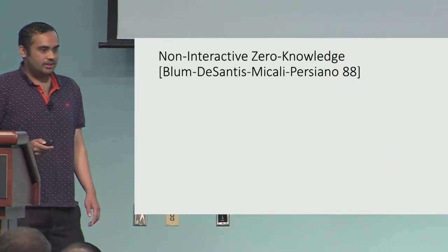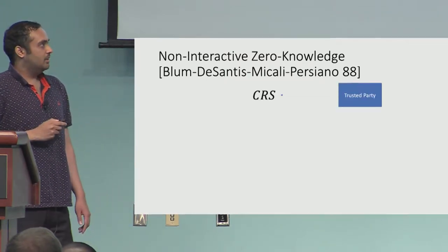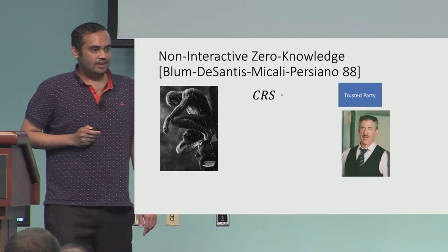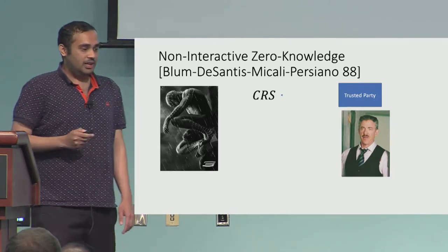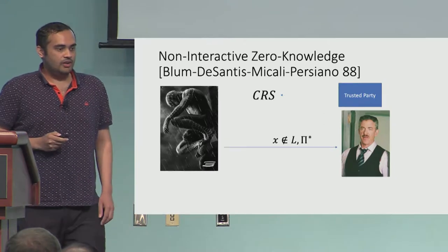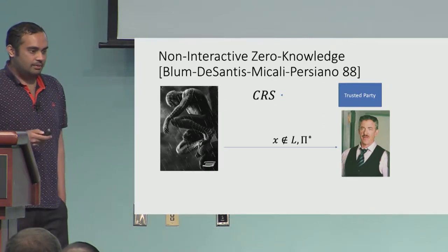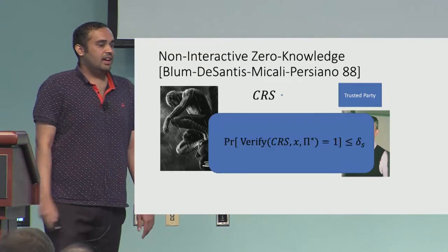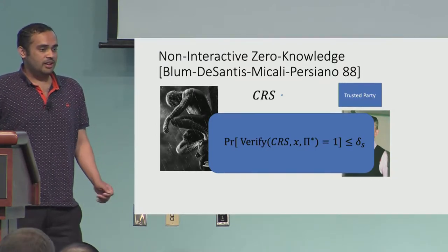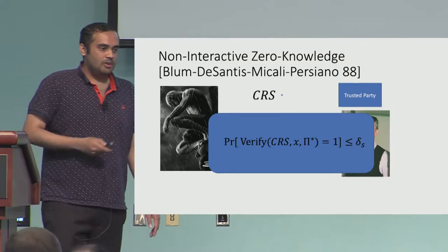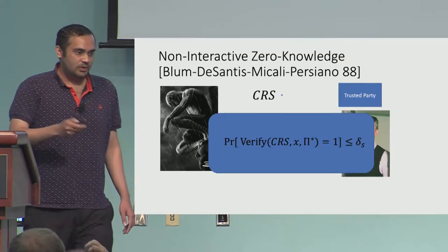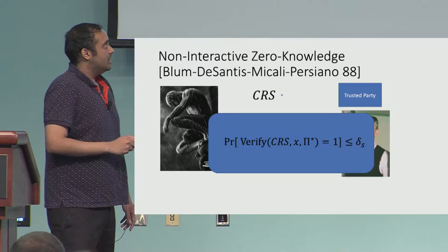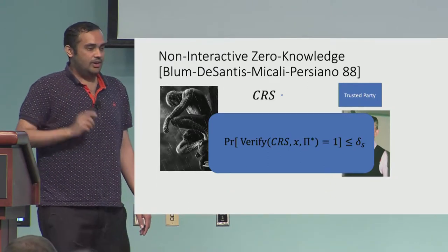The first security notion is soundness. The experiment is that the trusted party gives out a CRS randomly, and then there's a polynomial-time malicious prover who wants to convince the verifier of a false statement with a proof that verifies corresponding to that CRS. We say that a NIZK argument system is δS-sound if the maximum probability with which this malicious prover can convince the verifier of such a false proof is bounded by δS. I will refer to δS as the soundness error.